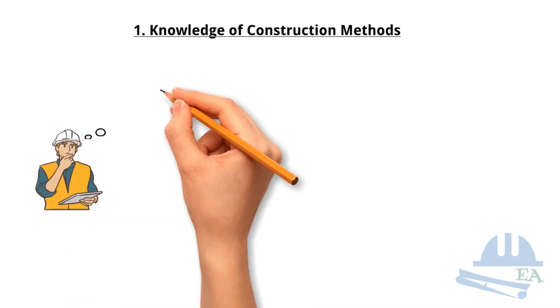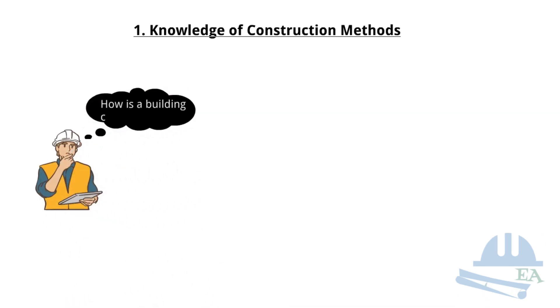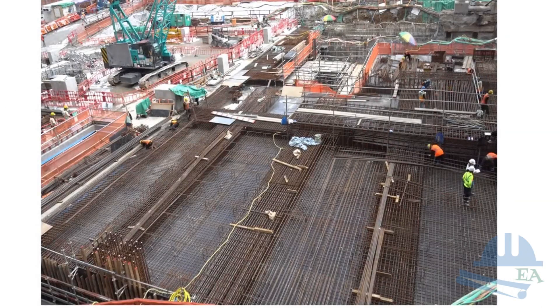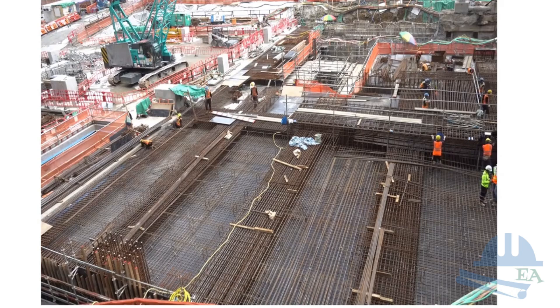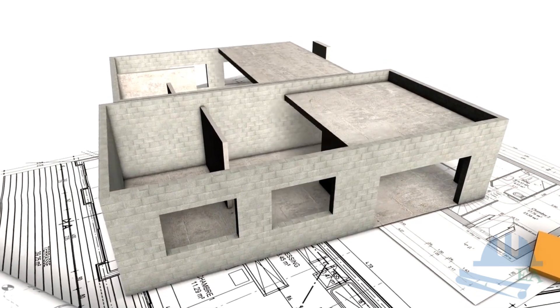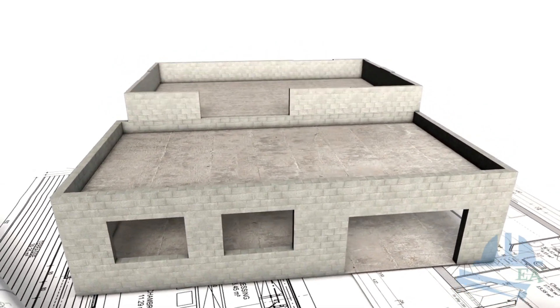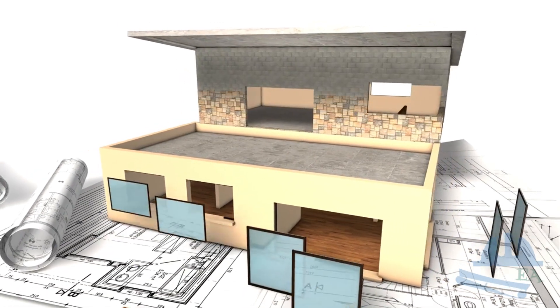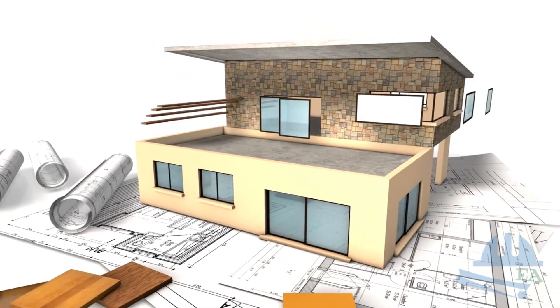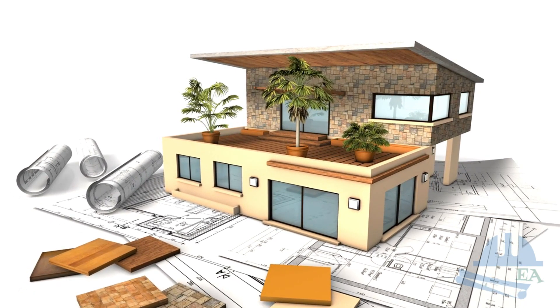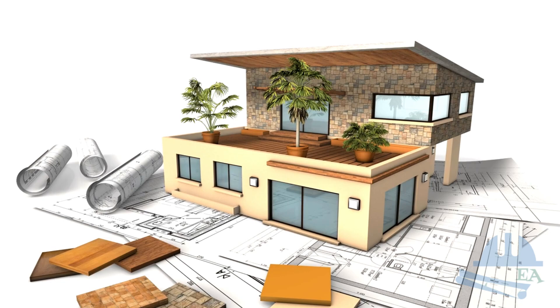Knowledge of Construction Methods. As a structural engineer, it's really important to understand how structures are built. We need to know how reinforcement is placed, how formwork is set up, and how concreting is executed. Having a clear understanding of the entire construction process allows us to design and detail structural members more effectively. By keeping these practical aspects in mind, we ensure that our designs are not only innovative, but also feasible and efficient in real-world applications.